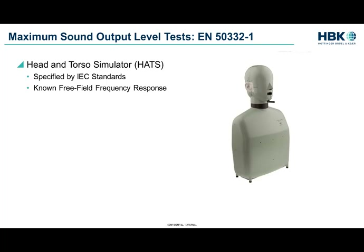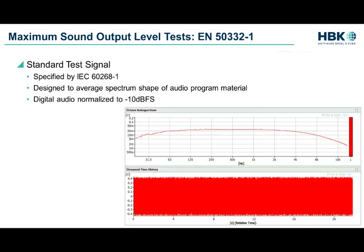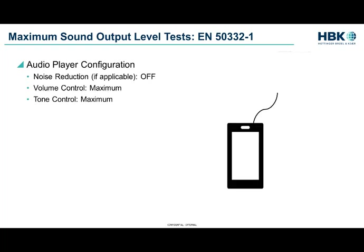The head and torso simulator is a well accepted solution to the problem of a personal audio test fixture. It is strictly specified by IEC standards and has a known published frequency response relative to the free field condition of sound in an open room. IEC 60268-1 formalizes a standard test signal for this type of test. This has a spectrum shape designed to statistically match typical audio content and is specified for digital audio to have an overall magnitude of minus 10 dB FS, or 10 decibels below the peak possible magnitude of the playback system, referred to as full scale. To ensure worst case conditions, the audio player must have any noise reduction features turned off, volume controls set to max, and any tone controls set to max.